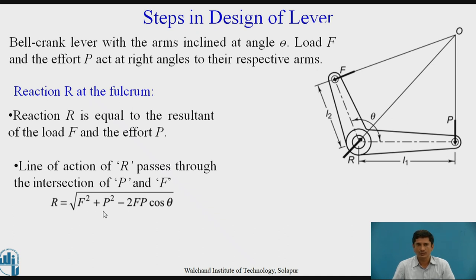We can recall from where this formula. R equals square root of F² plus P² minus 2FP cos θ. For a right angle bell crank lever where this θ becomes 90°, cos θ equals 0. The formula can be simplified.